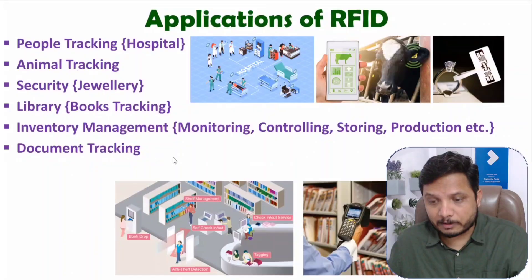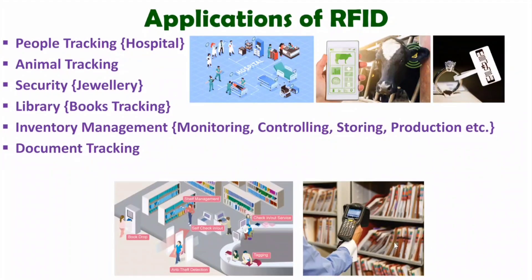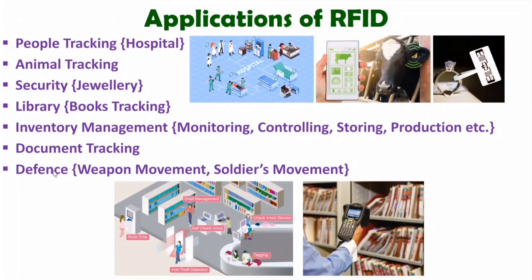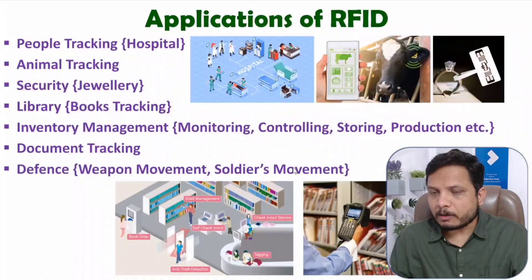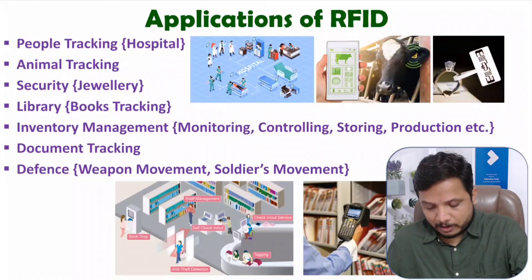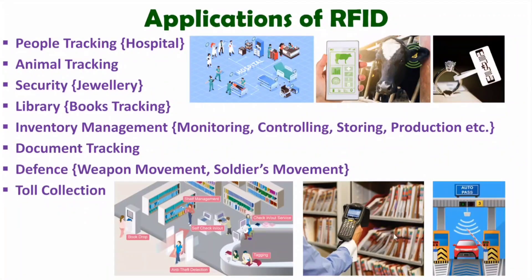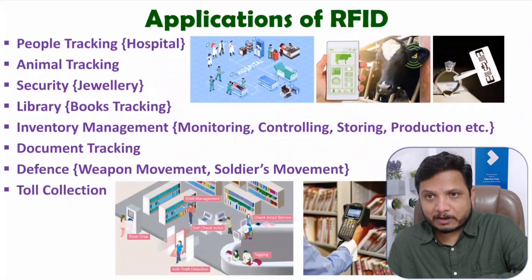In document tracking, if you have many documents in one place, with the use of RFID tags one can identify and track any document without needing to search manually through all files. In defense, applications include weapon movement tracking and tracking of force soldiers. If you have an RFID tag on soldiers, commands can be given to them based on their tracked location. Another application is toll collection, where the toll plaza can automatically take the toll from a car using an RFID tag via an auto-pass system. The car owner doesn't need to wait — scanning happens automatically and the amount is deducted from the account.